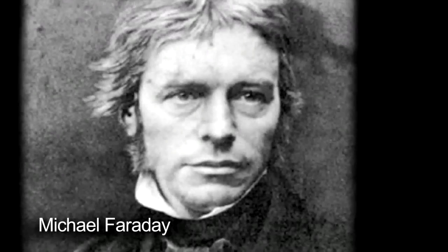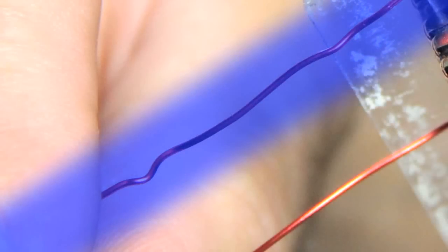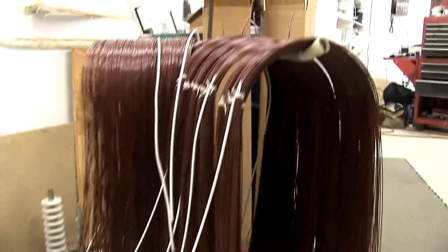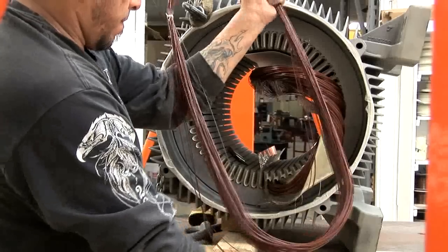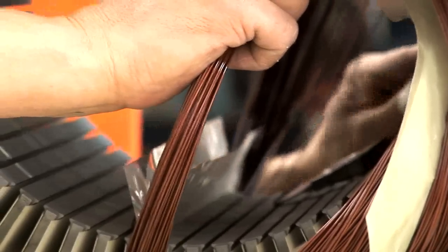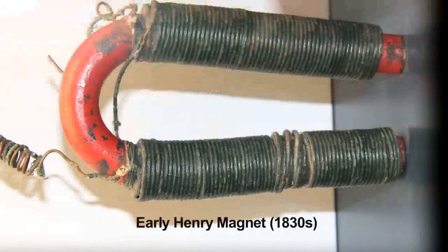Another pioneer, Michael Faraday, discovered that a single electrified wire generated a magnetic field. Joseph Henry figured out that if we add multiple insulated coils to the same power source, we could dramatically increase the strength of that magnetic field.